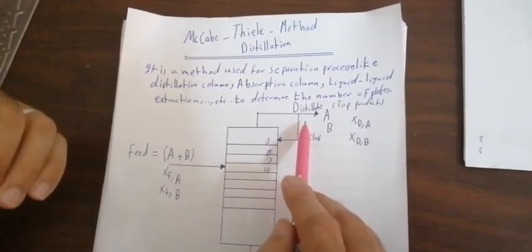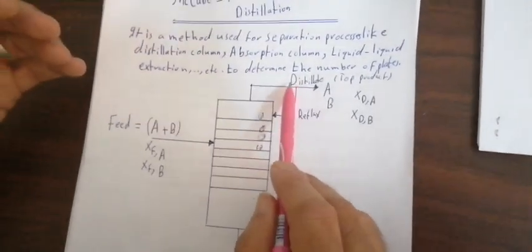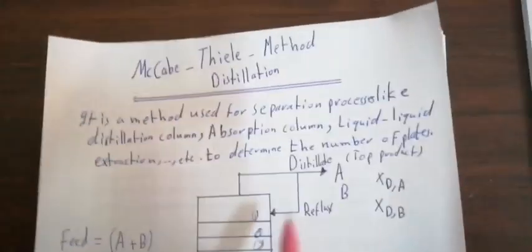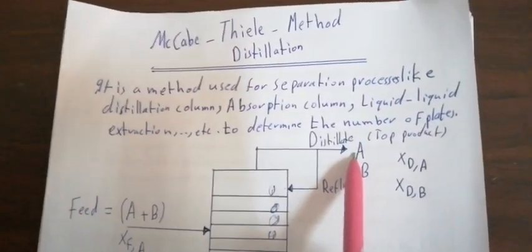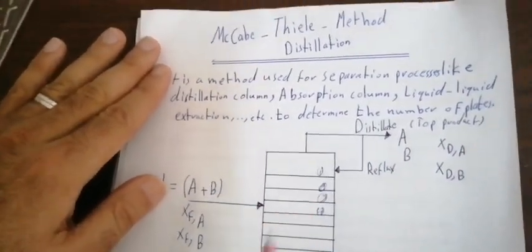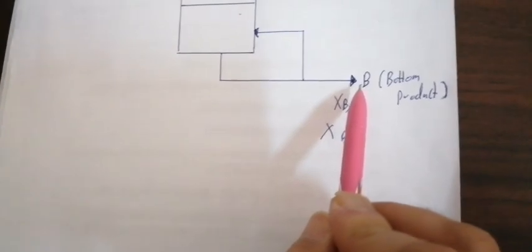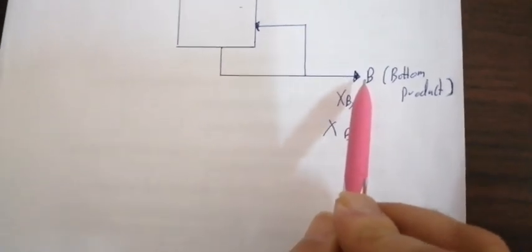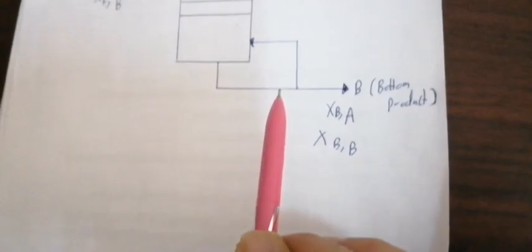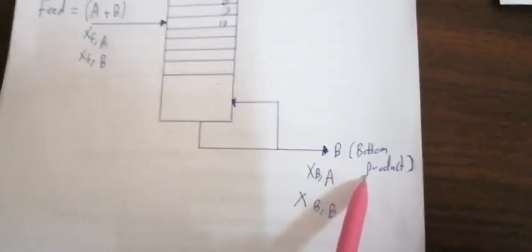The high volatility, low boiling point compound concentrates in the distillate section at the top. In the bottom, there is high boiling point and low volatility, which means the high concentration of the less volatile component will be in the bottom product.